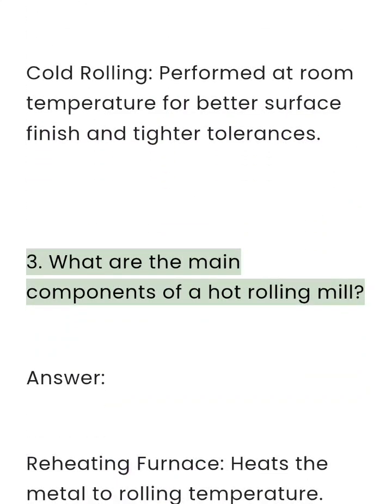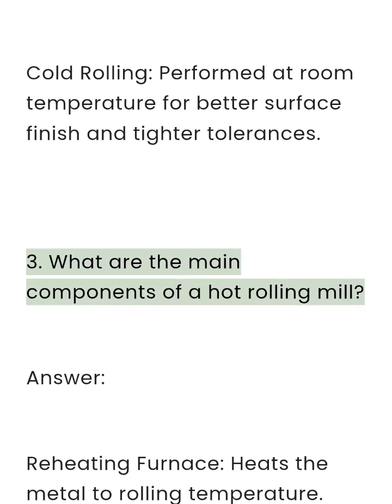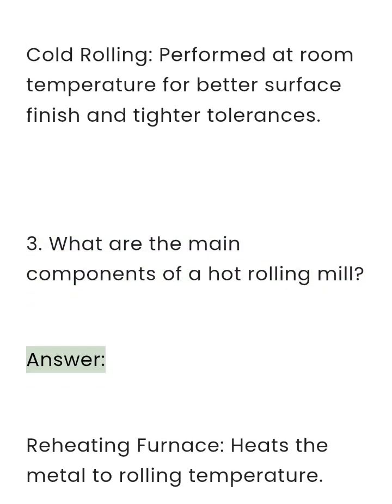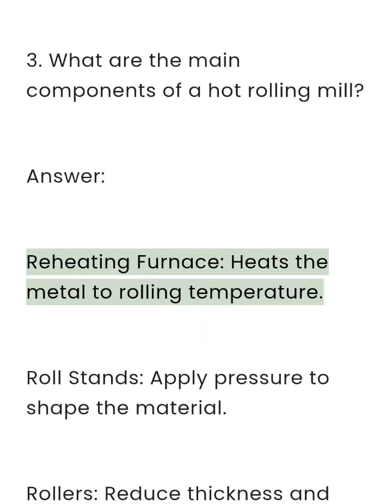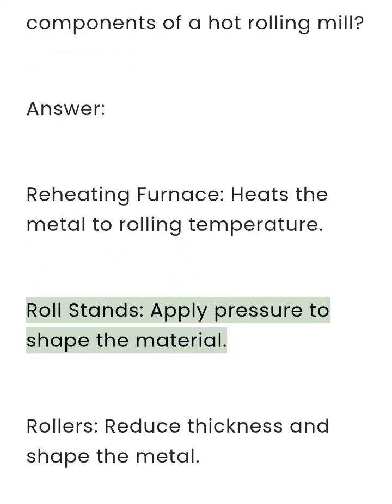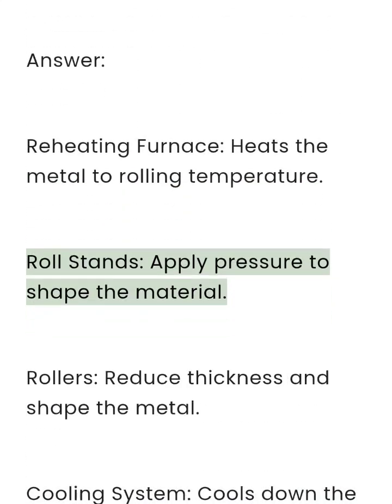Question 3: What are the main components of a hot rolling mill? Answer: Reheating furnace — heats the metal to rolling temperature. Roll stands — apply pressure to shape the material.